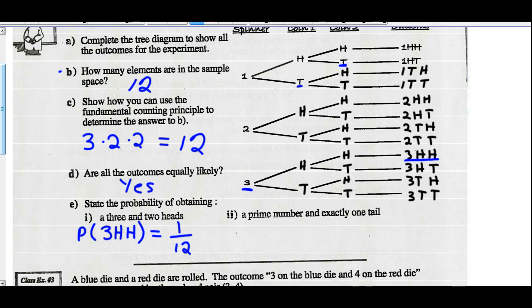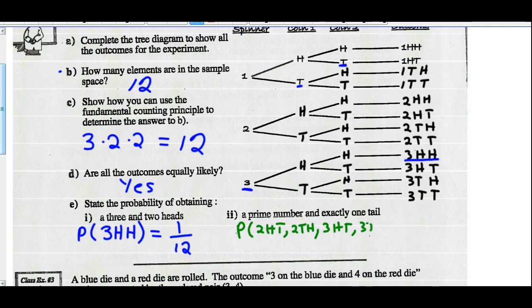Part 2: probability of a prime number and exactly one tail. A prime number on this spinner could be 2 or 3. The favorable outcomes are: 2-head-tail, 2-tail-head, 3-head-tail, and 3-tail-head. That gives four favorable outcomes out of 12 possible, which is a probability of one-third.